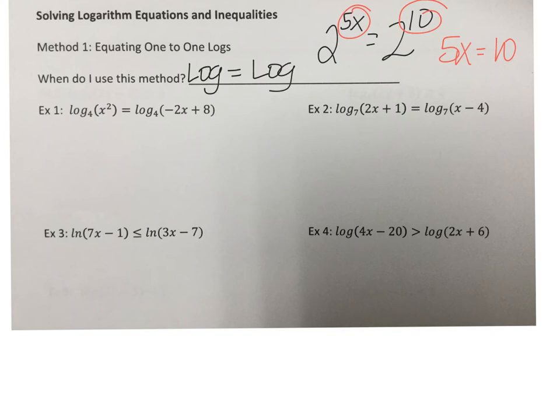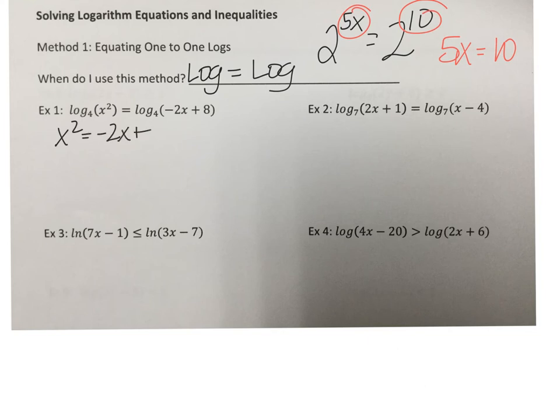Nothing else is being added, subtracted, or multiplied around it — just a log equal to a log. So we have log base 4 of x squared equals log base 4 of negative 2x plus 8. The log base 4 has to be the same on both sides — it can't be log 4 and log 5 because then you can't equate them. So here we can say that x squared must equal negative 2x plus 8.